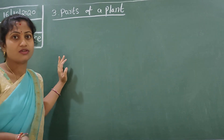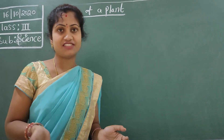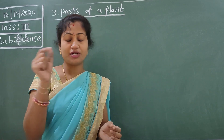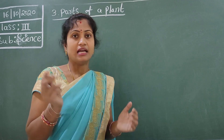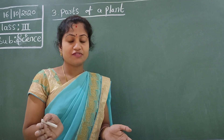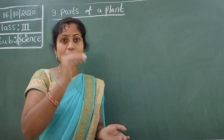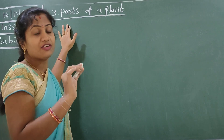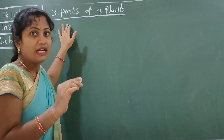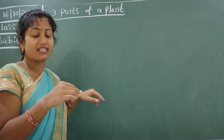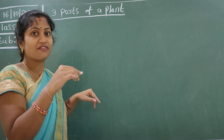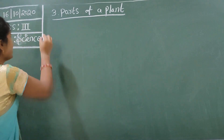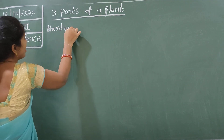Today we are writing the notes. Children, you have to open your class works. Keep your text book in front of you. You have to round up the hard words. First of all, take the pencil and circle the hard words in the text book. Then write in your class work. First circle the words in the text book, then write the lesson name in the class work, and keep the heading 'Hard Words'.